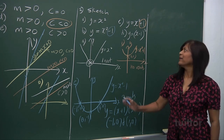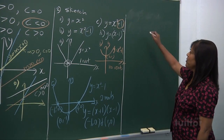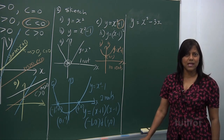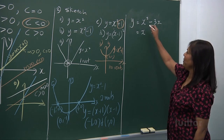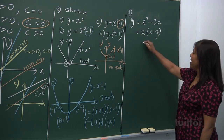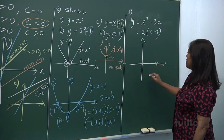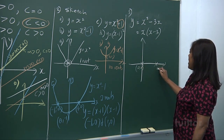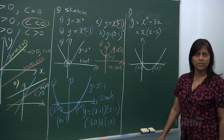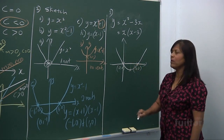Now we are going to look at more curve sketching. What happens if we give you a graph like y equals x squared minus 3x? Are you able to sketch the graph? You can factorize it as x(x minus 3). The roots are going to be: when y is 0, one root is 0 and the other root is 3 — points (0, 0) and (3, 0). When you have two roots, the midpoint will be the turning point. You add the two x-values: 0 plus 3, and divide by 2.